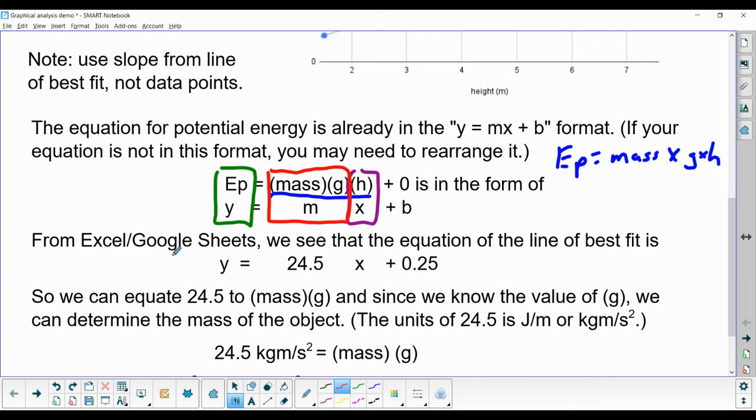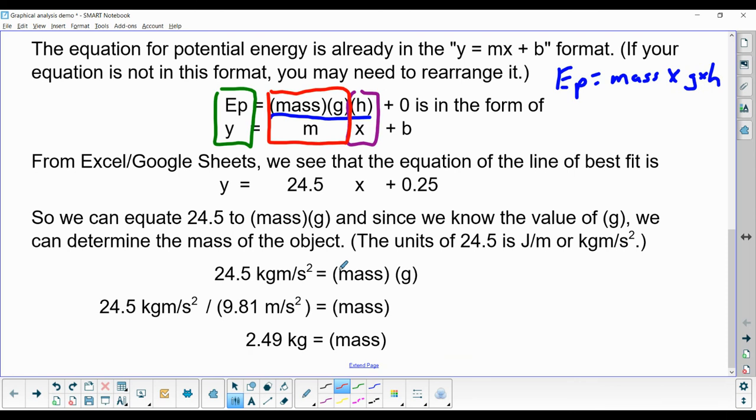And again, from Excel and Google Sheets, we see the equation of the line of best fit is y equals 24.5x plus 0.25. The x here is equivalent to height. So then we can see that 24.5 is the same as mass times g.